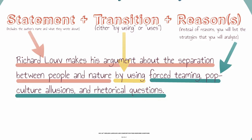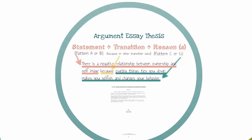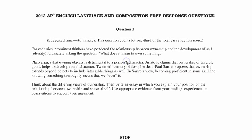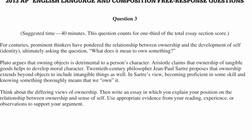Last but not least, we're going to look at writing a thesis statement for the argument essay. This is the most traditional type of essay and has the most traditional type of thesis. In this prompt, we're asked to explain our position on the relationship between ownership and sense of self.